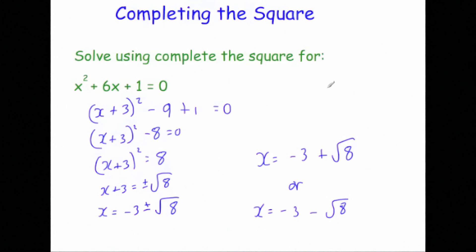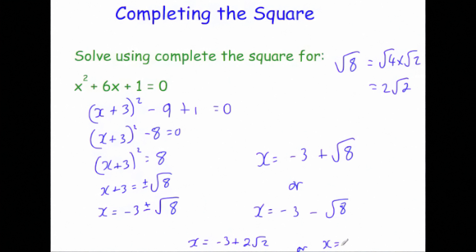Root 8 can be simplified using surds. The biggest square number that goes into 8 is 4, so root 8 equals root 4 times root 2, and the square root of 4 is 2, giving 2 root 2. So the answers can also be written as x equals minus 3 plus 2 root 2, or x equals minus 3 minus 2 root 2. That's completing the square, and that's why it's particularly useful for solving quadratics where the answers are surds.